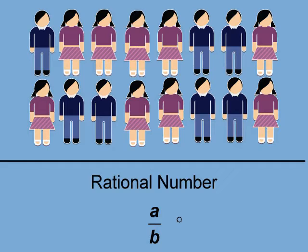But integers can also be rational numbers — we'll see examples of those later in the video. In this example, we are given a classroom of boys and girls. The first task is to find the ratio of boys to girls.